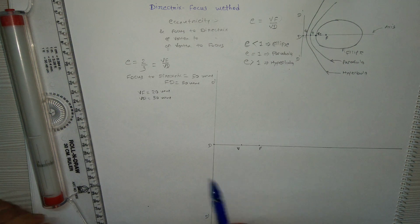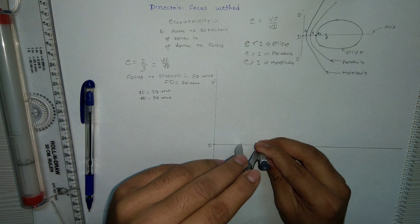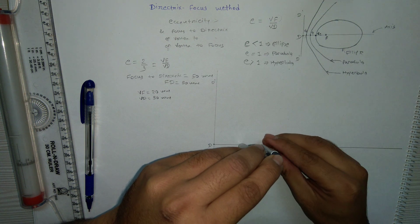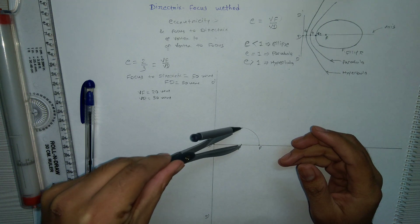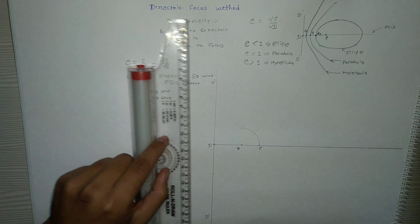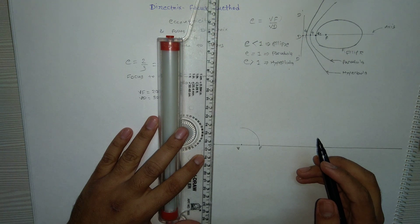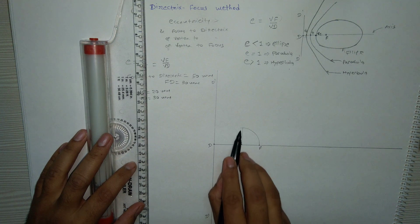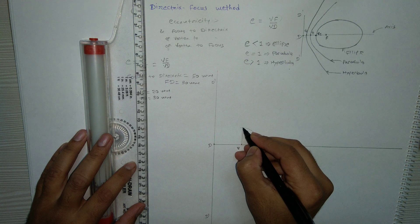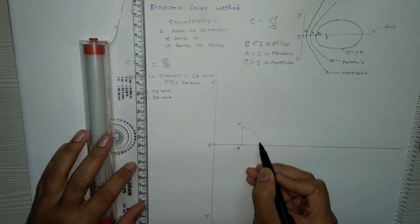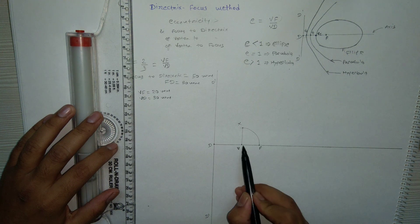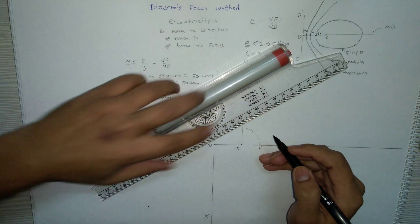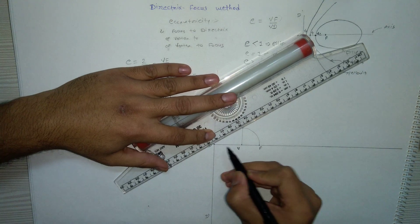Once you mark points F, V, and D, the next task is to draw one arc with center V and radius equal to Vf. Also draw one vertical line from V. The intersection of this vertical line and the arc gives point X. Join point X with D and extend this line.